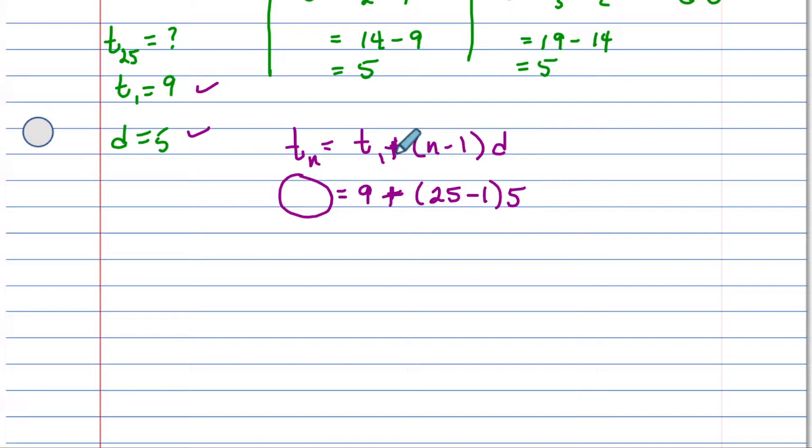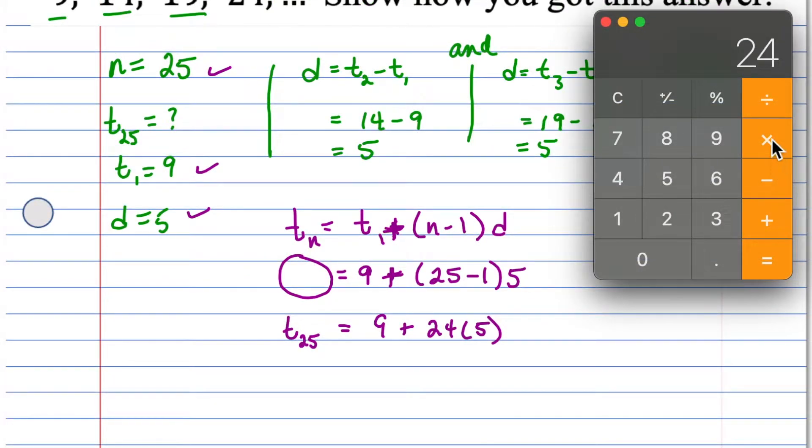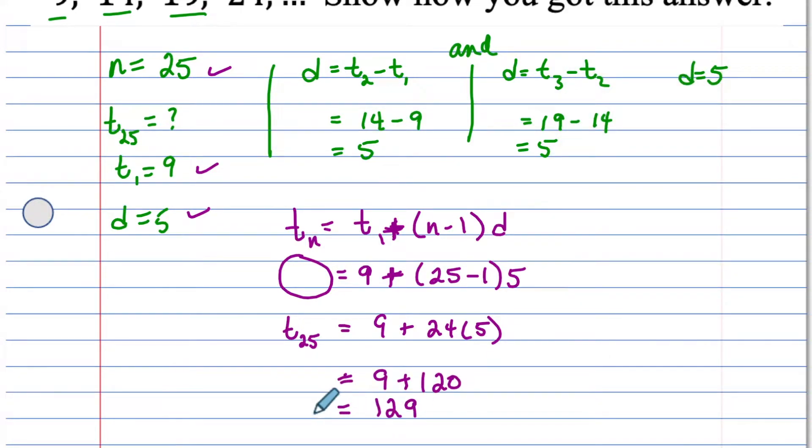A common mistake students make is they forget to put that plus. t of the 25 equals 9 plus 24 times 5. 24 times 5 is 120. Our value for the 25th term is 129. The sequence looks like 9, 14, 19, 24, dot, dot, dot, and that 25th term is going to be 129.